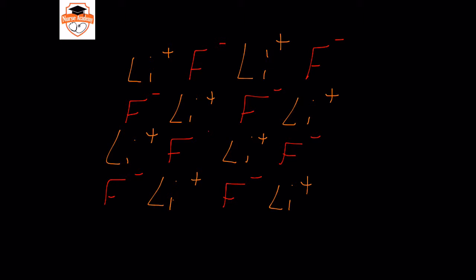Ionic bonds tend to produce compounds with very high melting points because of the positive-negative interaction. Essentially, every positive ion is surrounded by six negatives and each negative is surrounded by six positives. That is essentially how ionic bonds form and exist.